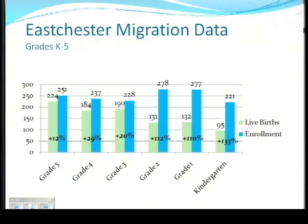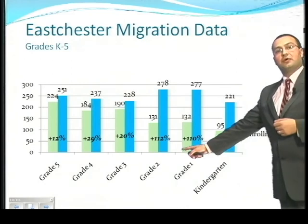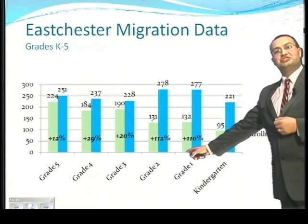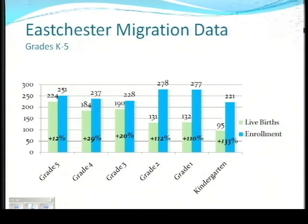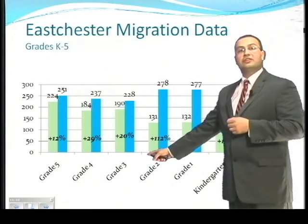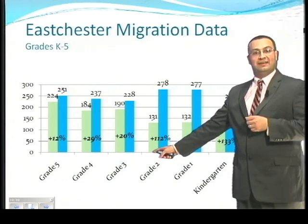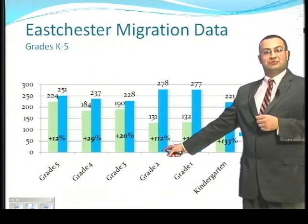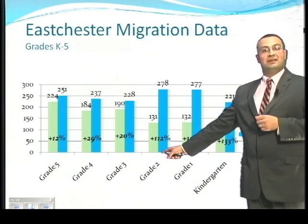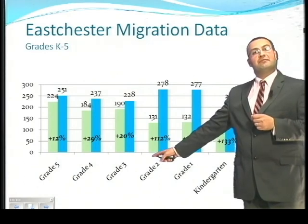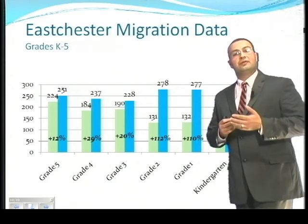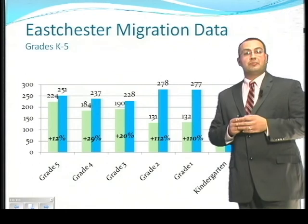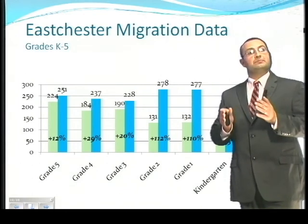Looking at grade 1, there were 132 live births in the East Chester School District catchment area, but there are 277 students enrolled in grade 1 — that's a 110% increase. And in grade 2, there were 131 students born in 2003, and there are 278 students in grade 2 in our district, which is a 112% increase from live births to students enrolled. We'll also notice that in grades 3, 4, and 5, there is a similar pattern of increase, although not as dramatic.